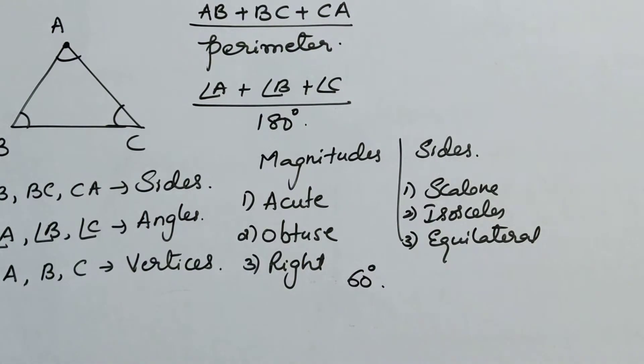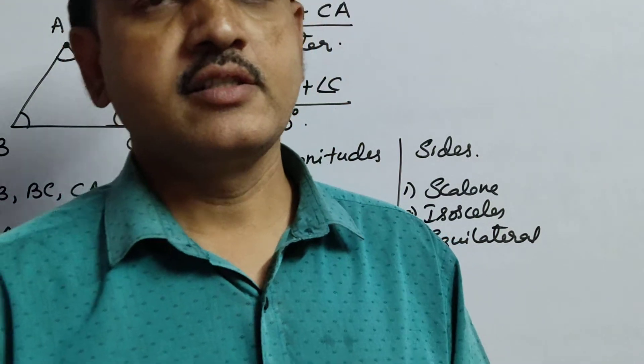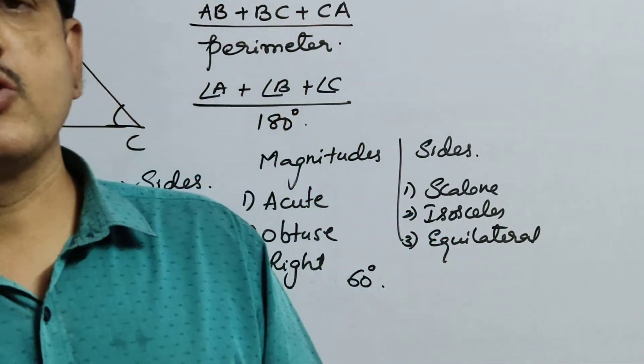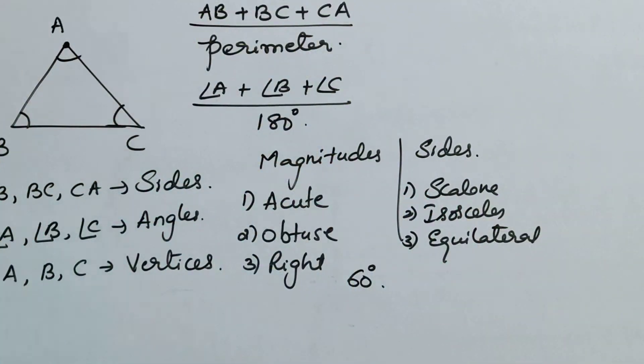This is all we learned in earlier classes. Today we are going to learn about different types of properties of triangles. There are four types of properties of triangles.